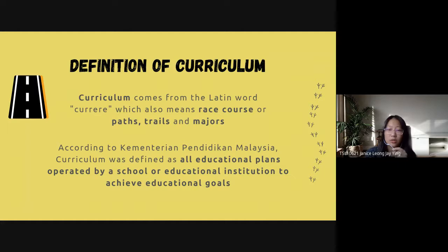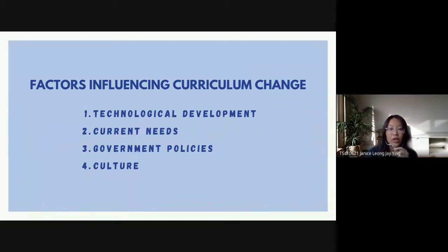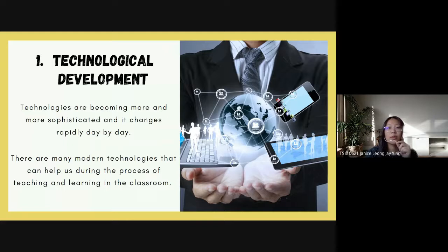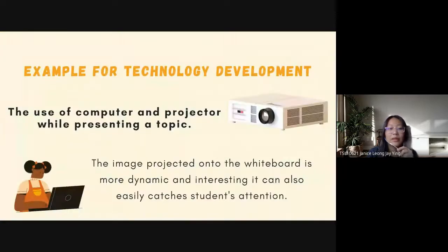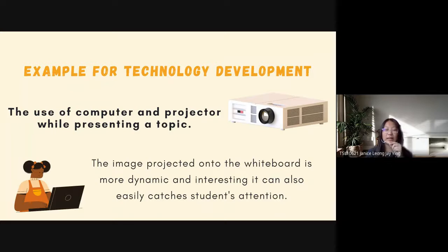Now going into the four factors that influence curriculum change: technological development, current needs, government policies, and culture. For technological development, technologies as we all know are becoming more and more sophisticated and they change rapidly day by day. We can see different technologies coming one after another, and there are many technologies that can help us during the process of teaching and learning in a classroom. An example is the use of a computer and projector when presenting a topic or slide in class, as the image projected onto the whiteboard is more dynamic and interesting.